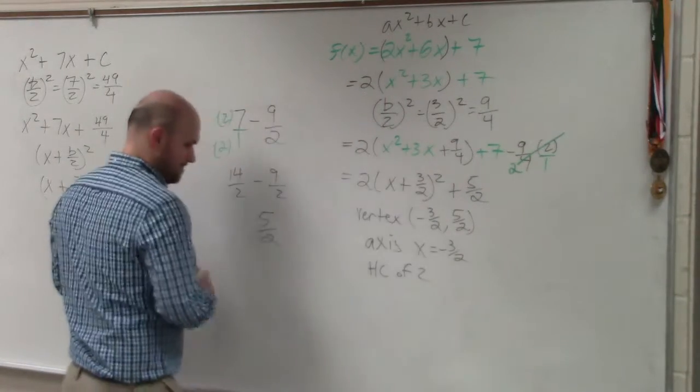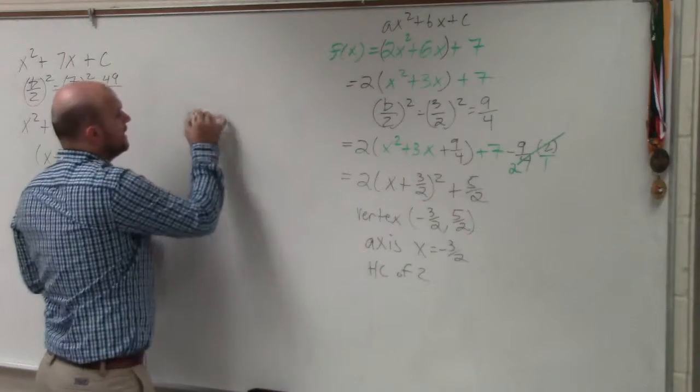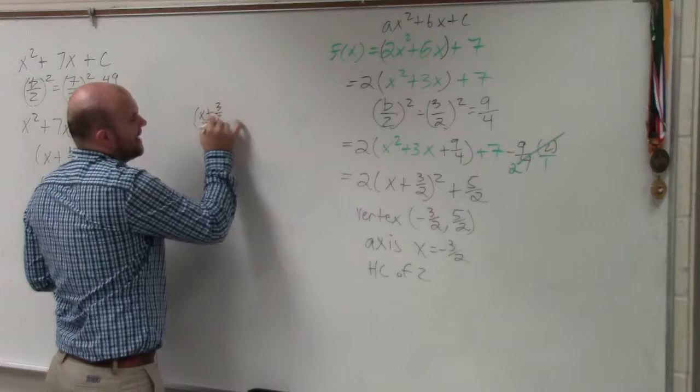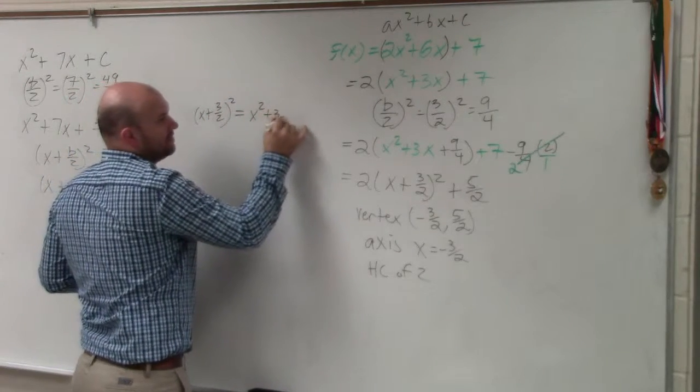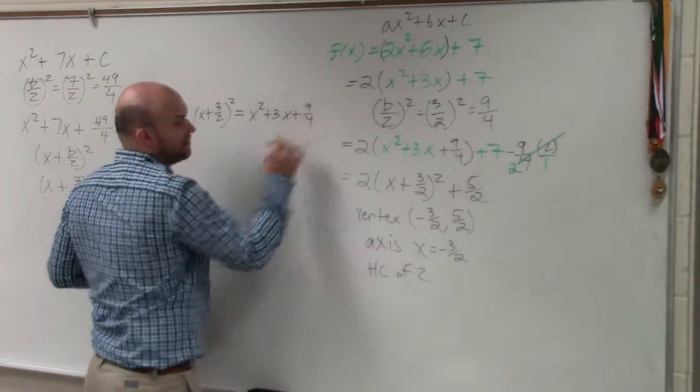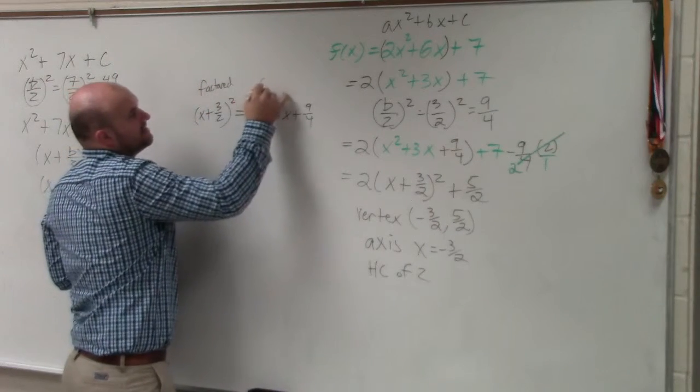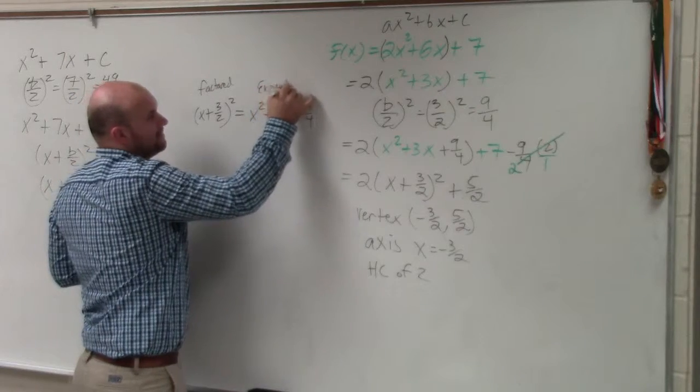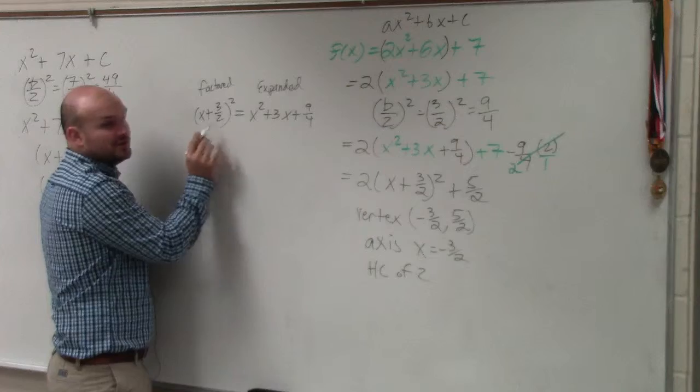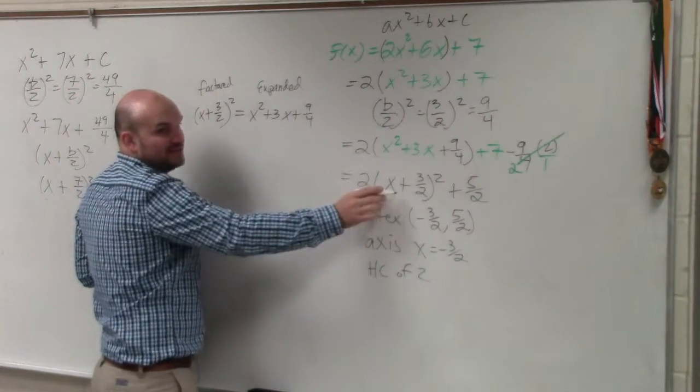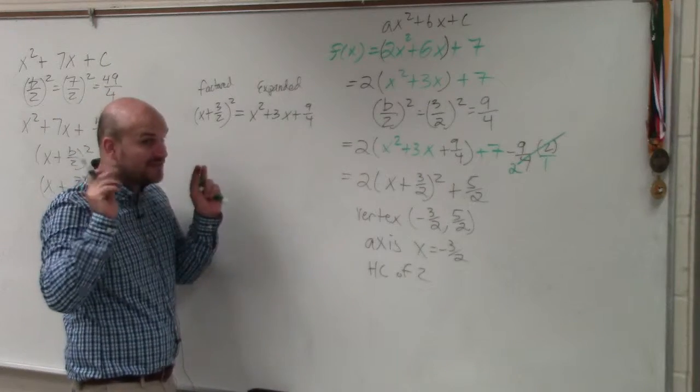What I'm saying is x plus 3 halves squared is the same thing as x squared plus 3x plus 9 over 4. This is factored form. This is expanded form. Now, just real quick, let's just go through it. So when you have it in expanded form, you have to put it in factored form. Well, how do you always put it in factored form? Well, you can factor it. But when you have fractions, I'm not stupid. I know that's difficult to factor thinking of fractions.